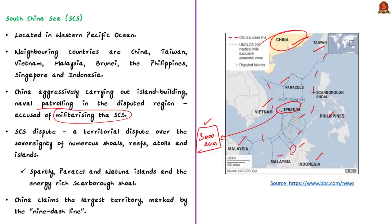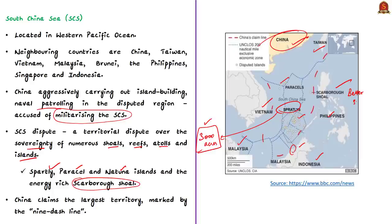The scale and speed of China's activities is increasing. The dispute in the South China Sea refers to territorial disputes over sovereignty of waters, including numerous shoals, reefs, atolls, and islands. Important islands include the Spratly Islands, Paracel Islands, and Natuna Islands in the southern part. The dispute also involves the energy-rich Scarborough Shoal. If China occupies the Scarborough Shoal, it will provide China better surveillance of US and Philippine forces, and China can also intimidate by deploying missiles there.